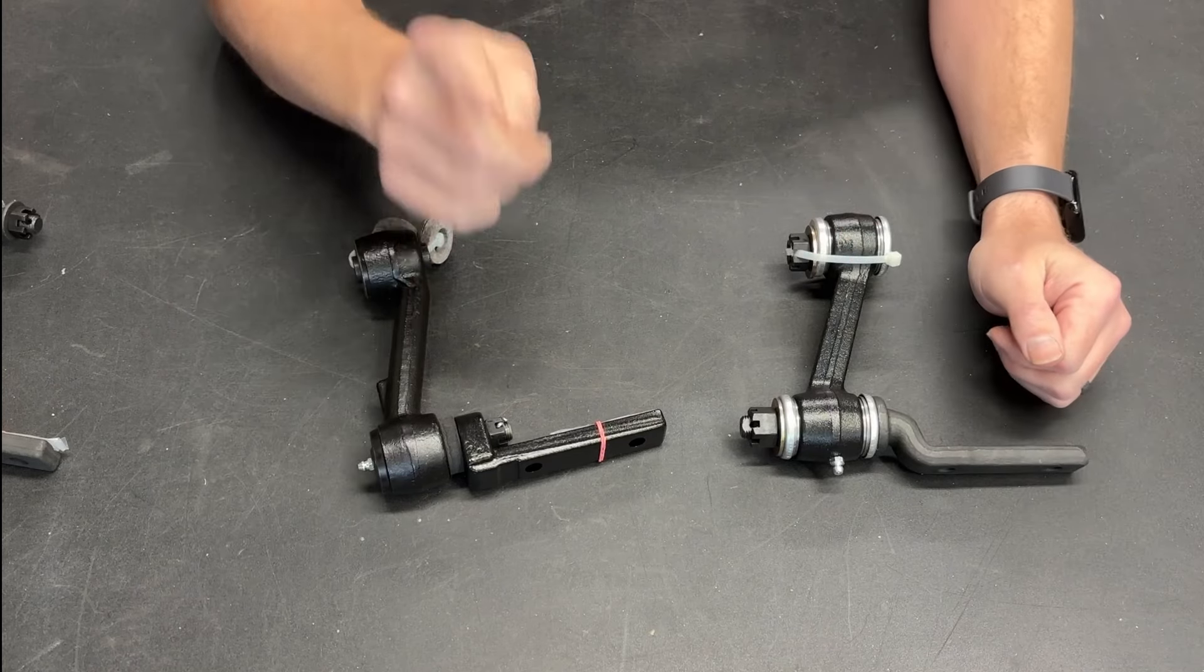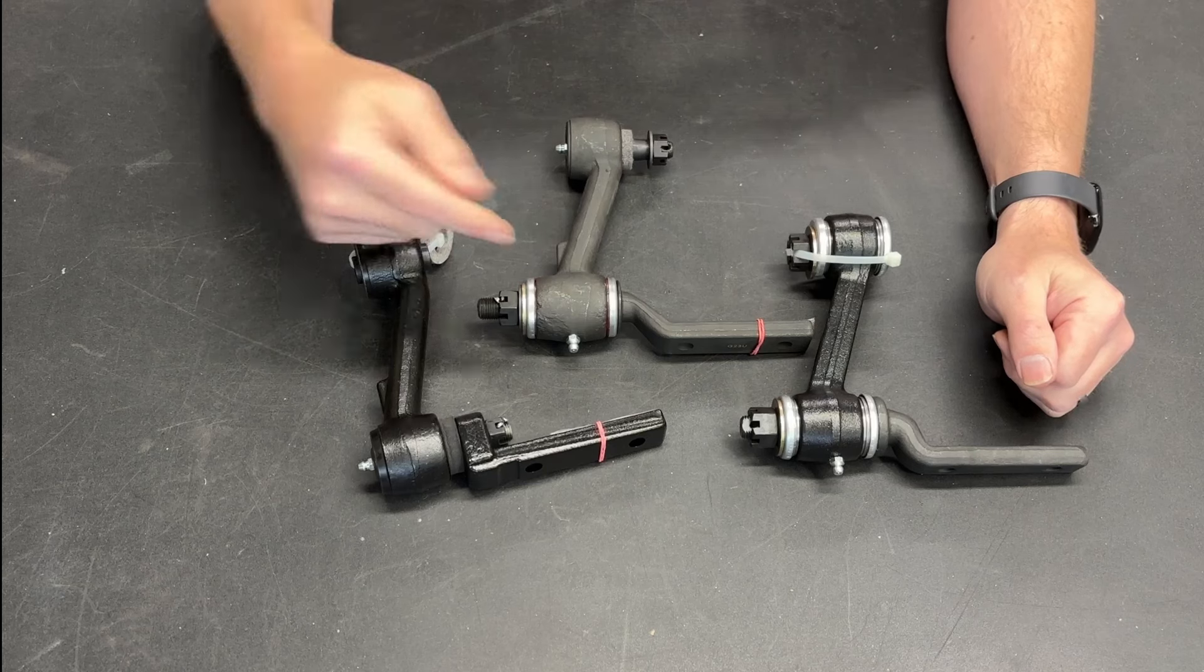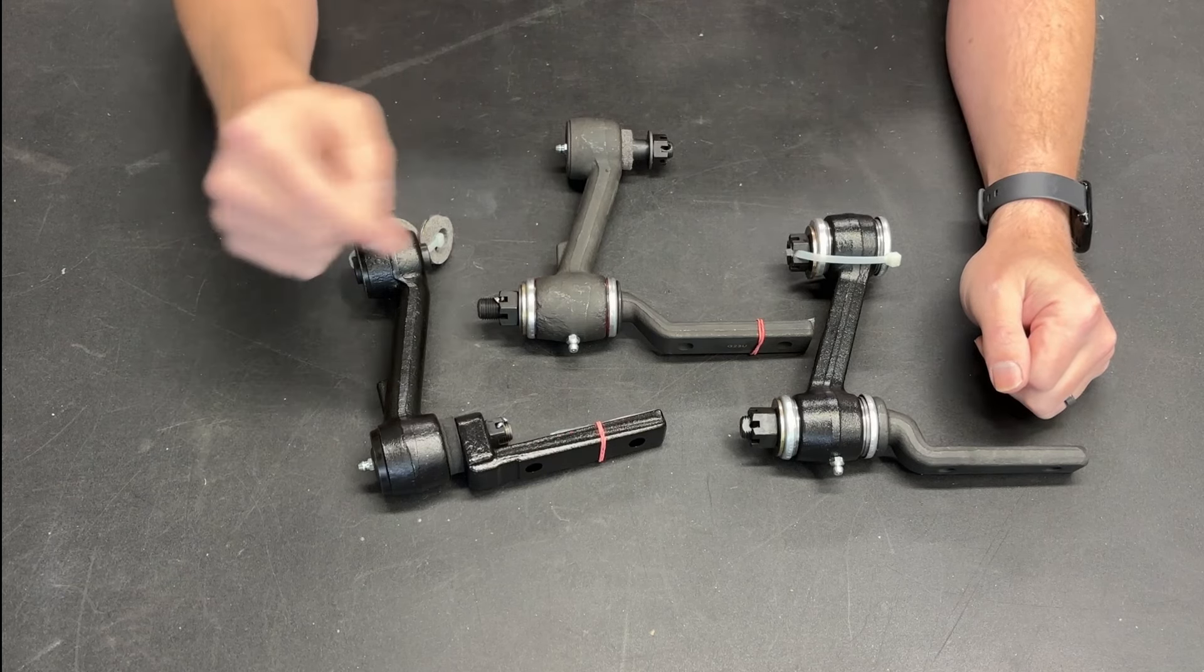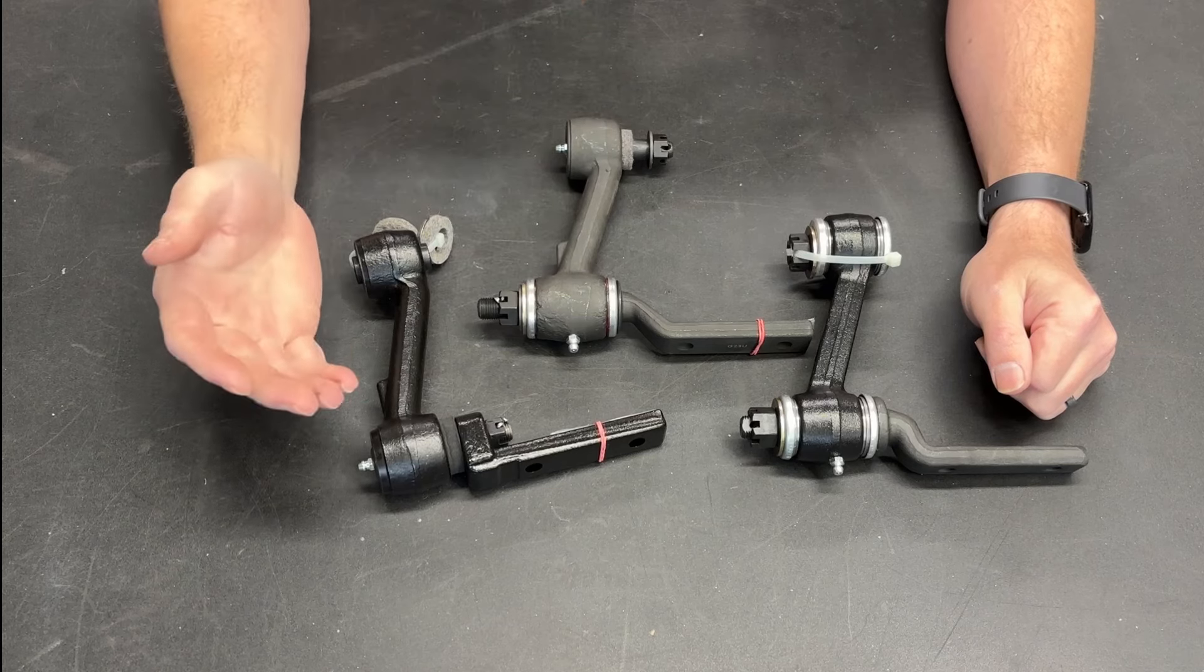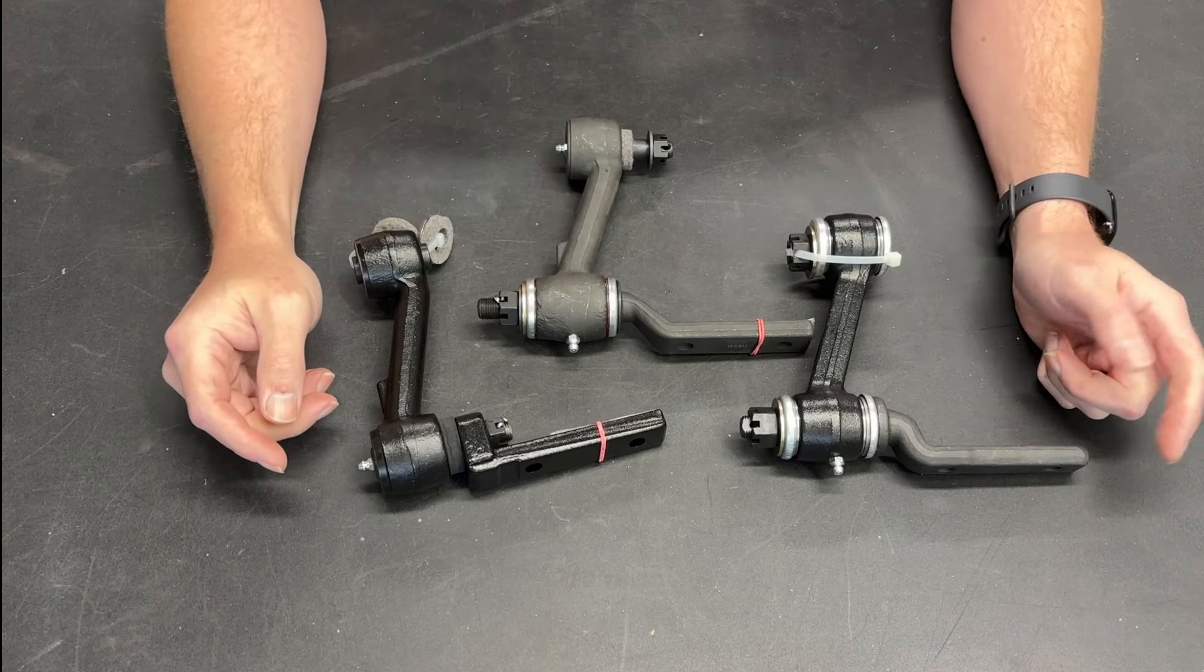So ultimately, if you are running stock steering in your classic Mustang, I recommend upgrading the rubber bushing idler arm to a roller type idler arm. And if you have a 67 through 70 vehicle and you can afford it, I would recommend the Open Tracker Racing Products Trans Am version of the roller idler arm.